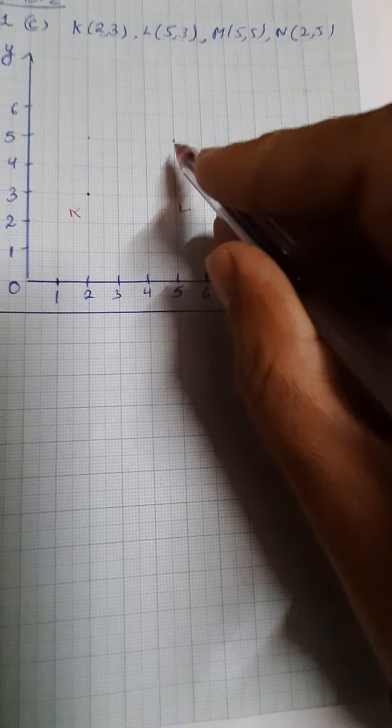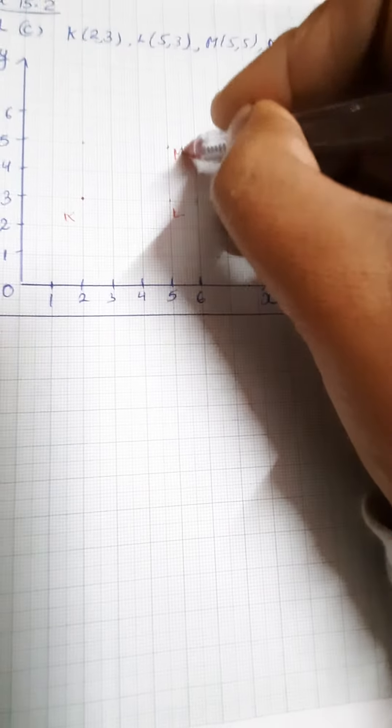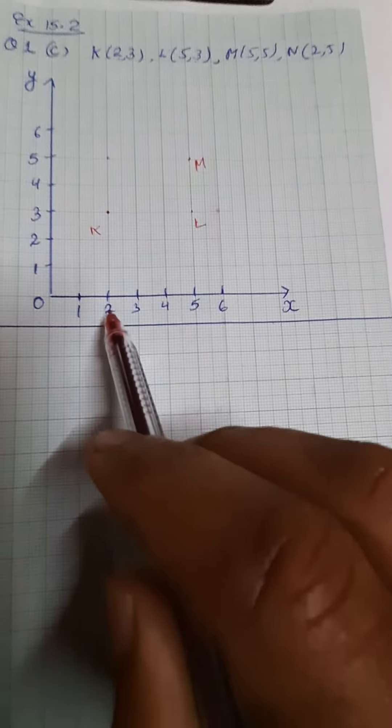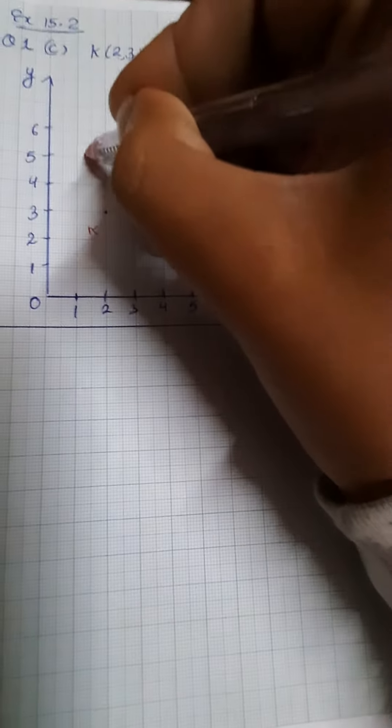Now point N (2,5). Value of x is 2, value of y is 5. This is our point N.